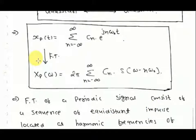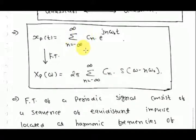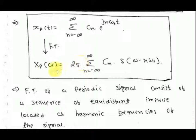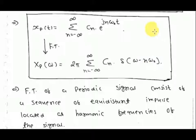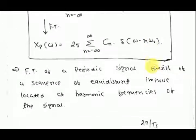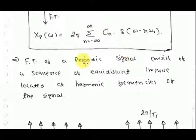For a periodic continuous signal x_p(t), we represent it in the form of a Fourier series. Taking the Fourier transform: the Fourier series coefficient c_n is a constant independent of t, and e to the power j*n*omega_0*t has Fourier transform 2 pi delta(omega minus n*omega_0), by the duality property. Since delta(t) has Fourier transform 1, then 1 has Fourier transform 2 pi delta(omega), and by frequency shifting we get 2 pi delta(omega minus n*omega_0). Therefore, the Fourier transform of a periodic signal consists of a sequence of equidistant impulses located at harmonic frequencies. The frequency domain representation becomes discrete.